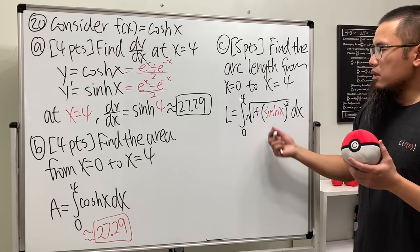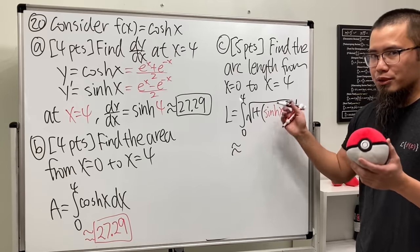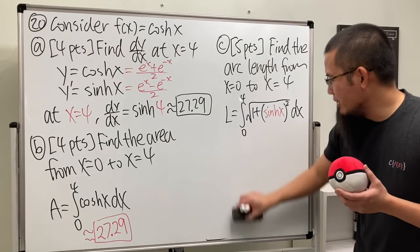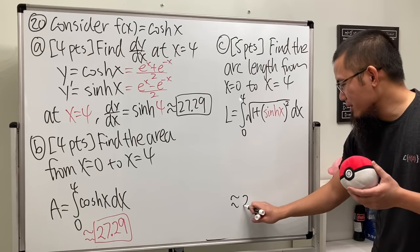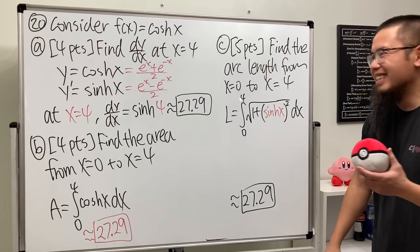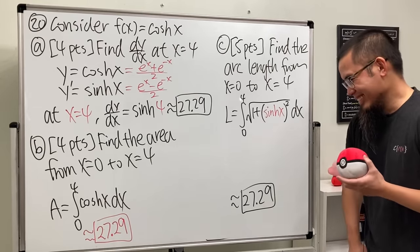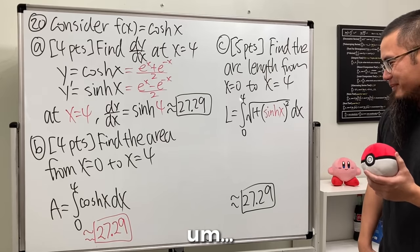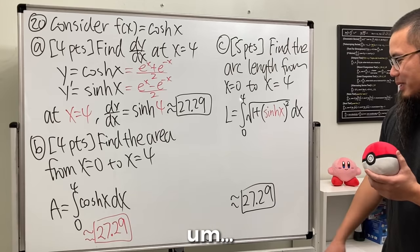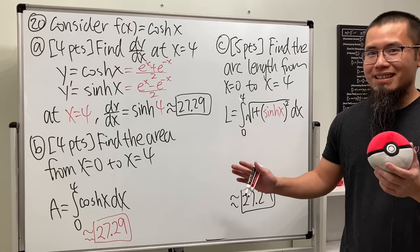We are in the x world. Again, they can just use the calculator, so I expect them just to punch this on the calculator, and they get 27.29.